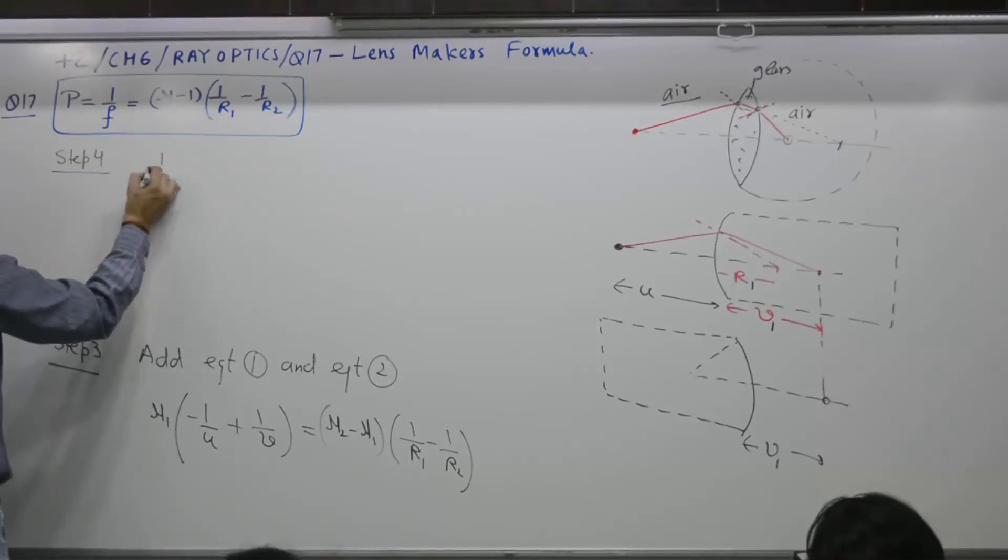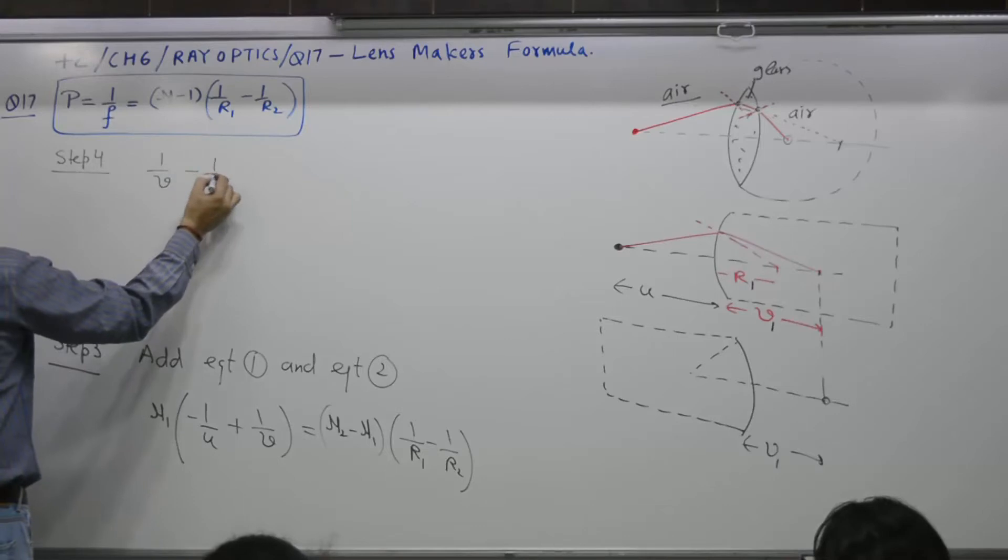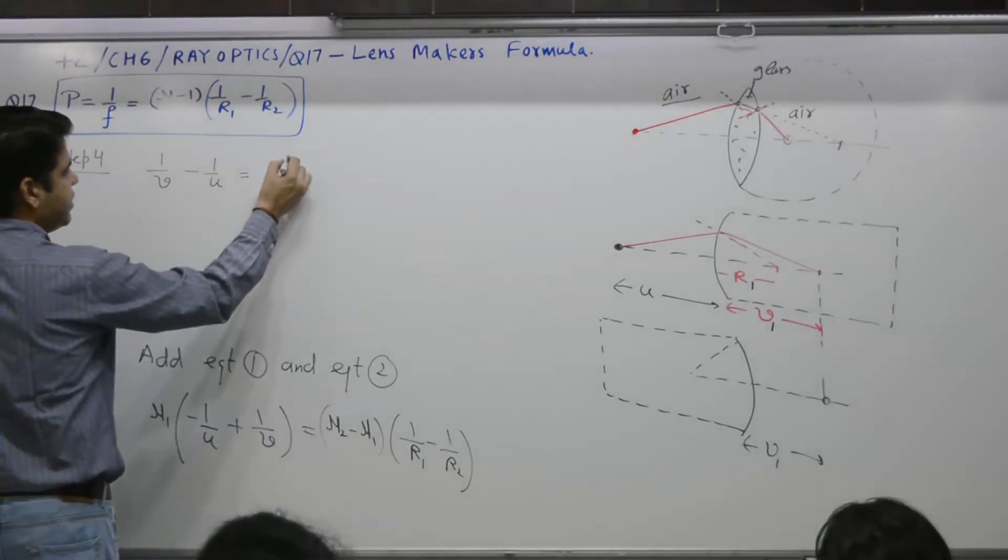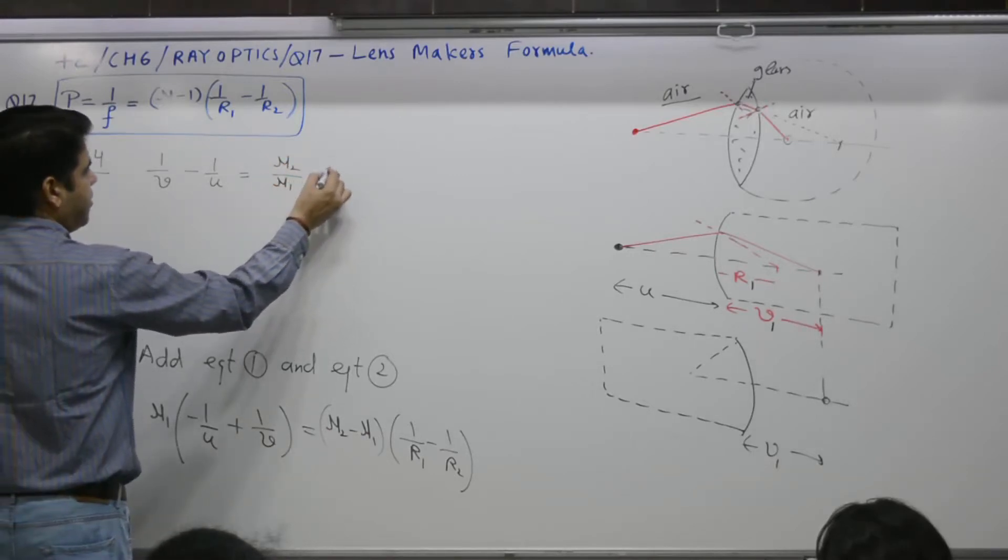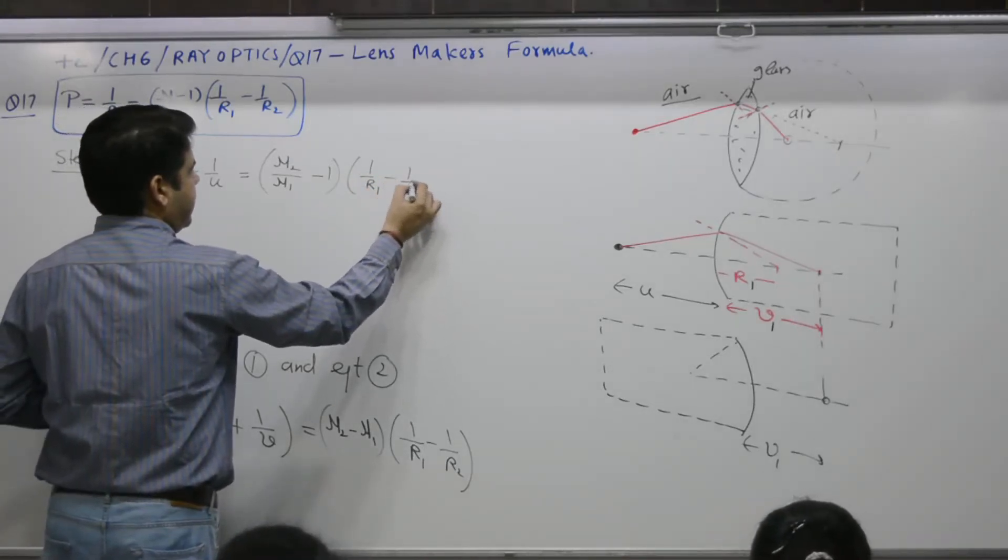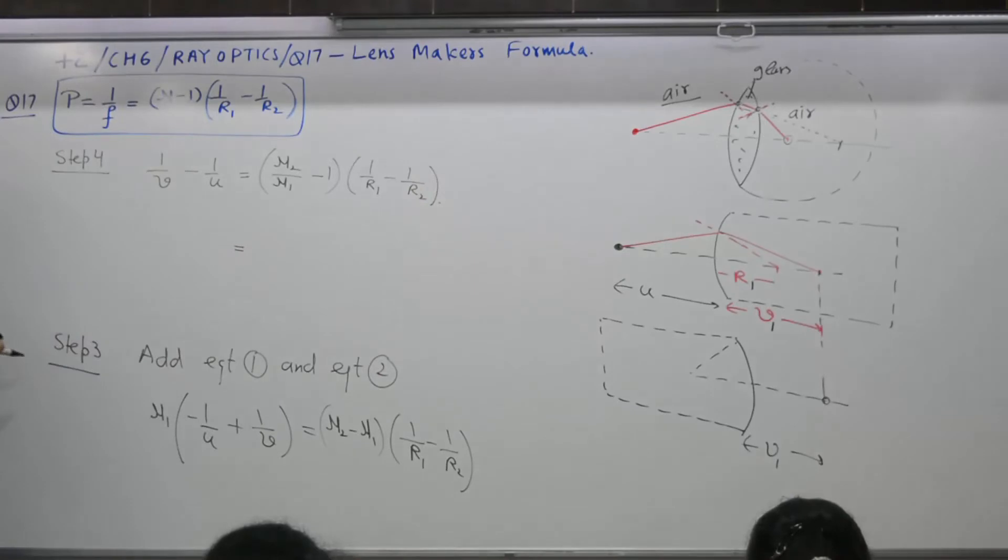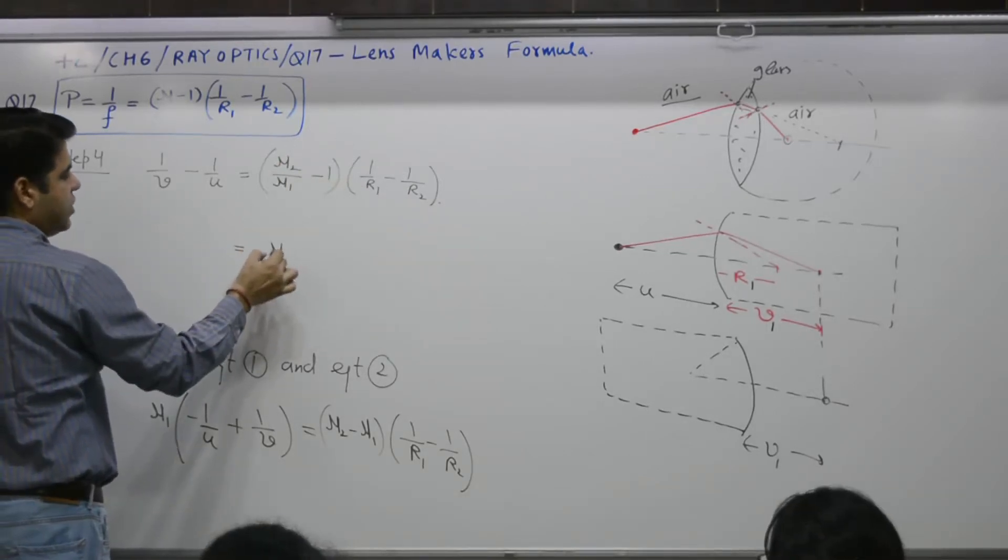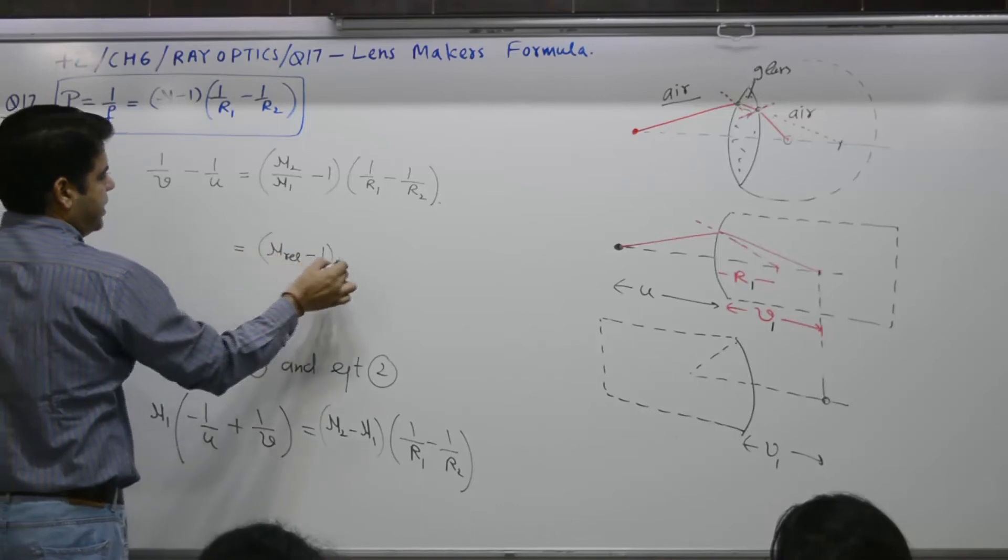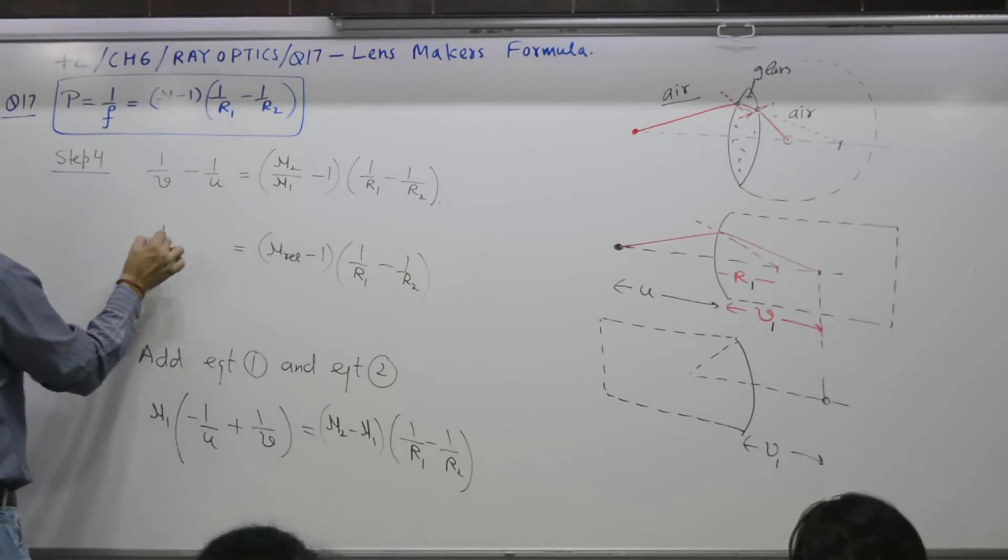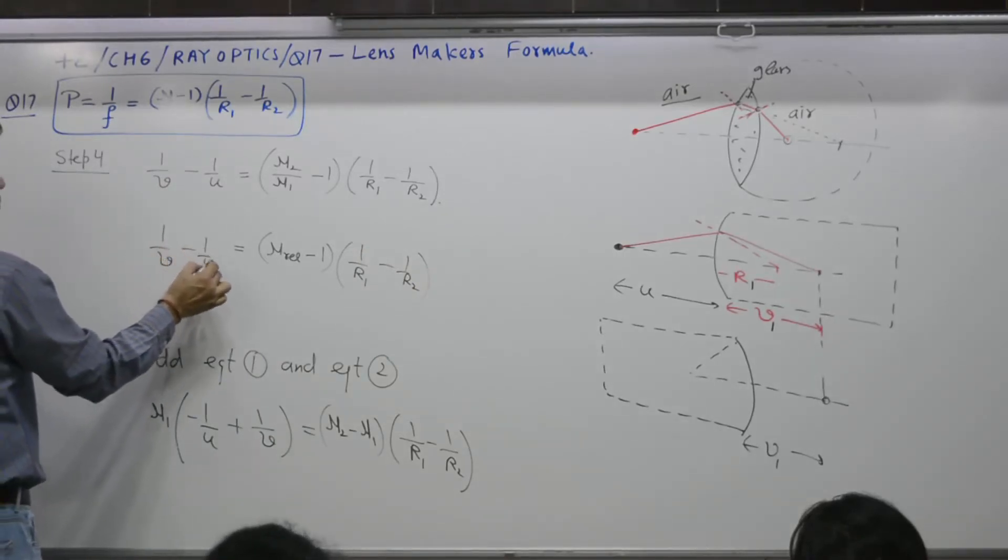Can I write like this? 1 by V minus 1 by U. You can shift nu1 to the other side. It is nu2 by nu1 minus 1 by R1 minus 1 by R2. Refractive index of a second material that is glass with respect to air is what? Nu2 relative minus 1 by R1 minus 1 by R2 is 1 by V minus 1 by U is equal to this.